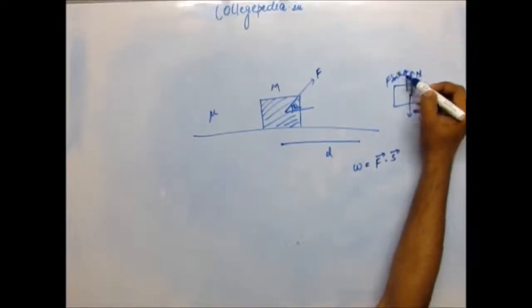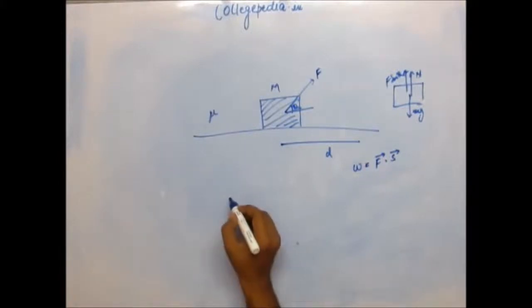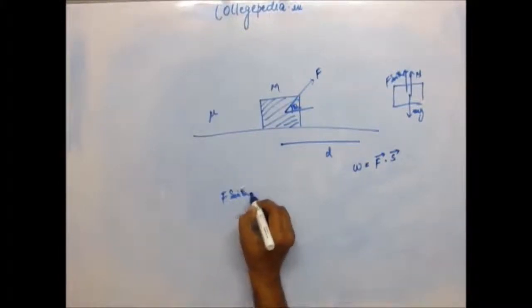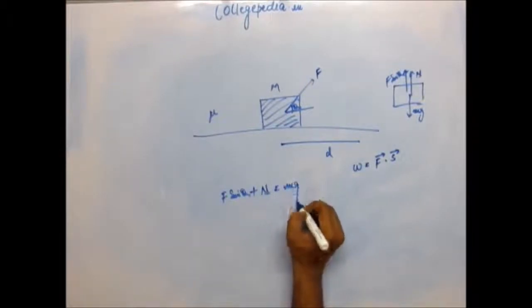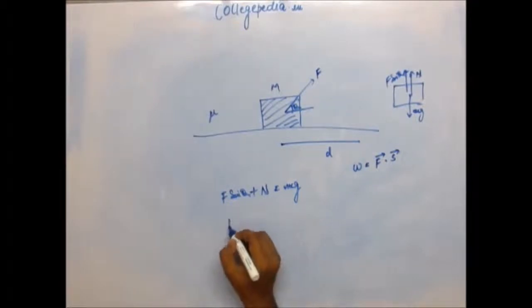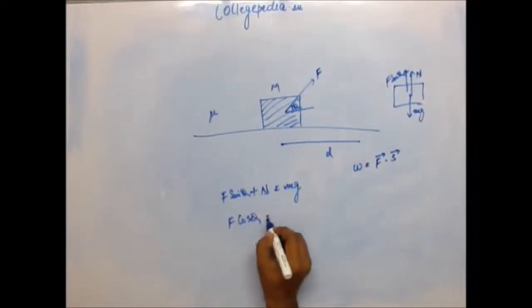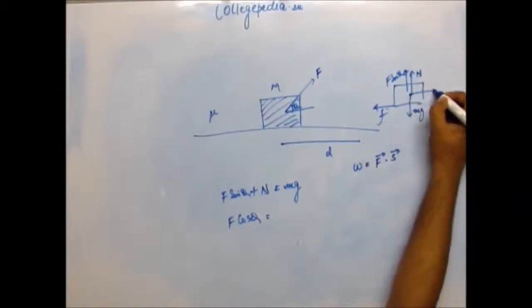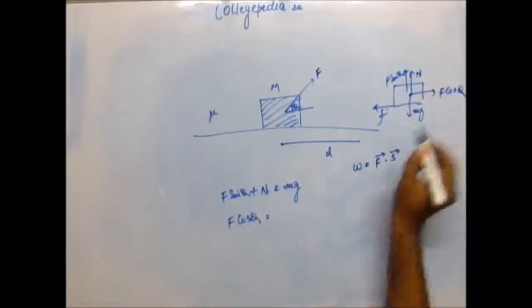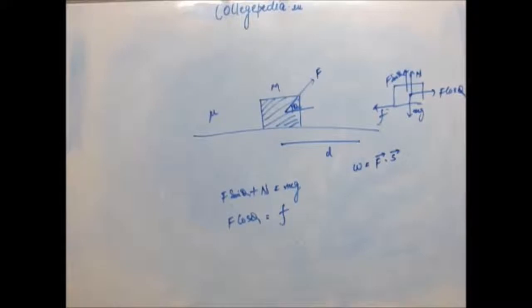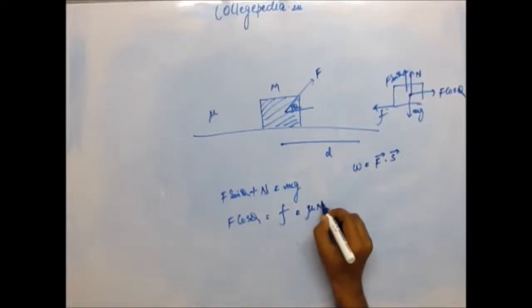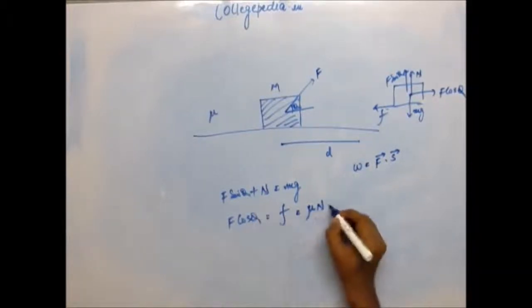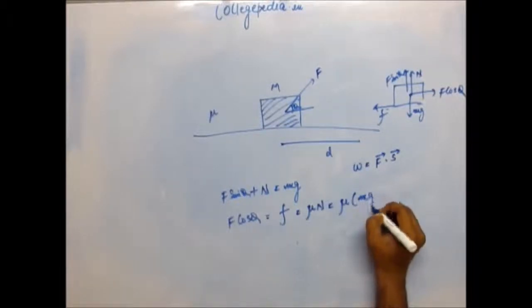Vertically balancing the force you have F sin θ plus normal reaction equals Mg. If you horizontally balance the force, then horizontally in the right hand direction we have F cos θ. In left hand direction you have friction force, and right hand side we have F cos θ. These should be equal only then it will gain low kinetic energy. Friction force is μ times normal reaction.